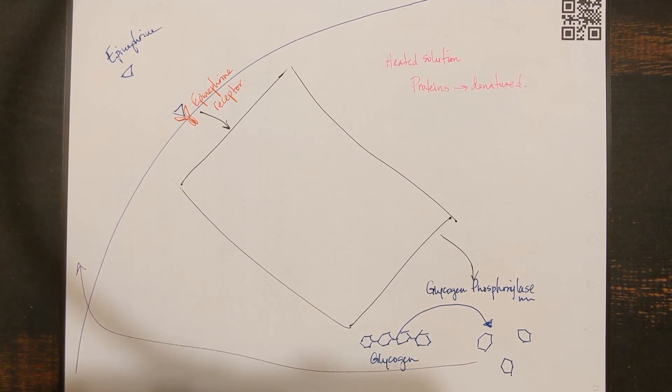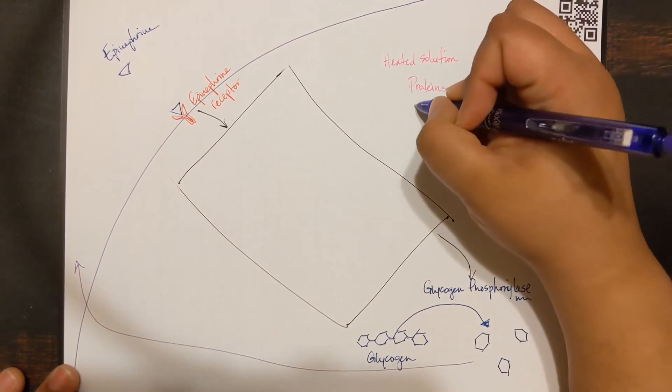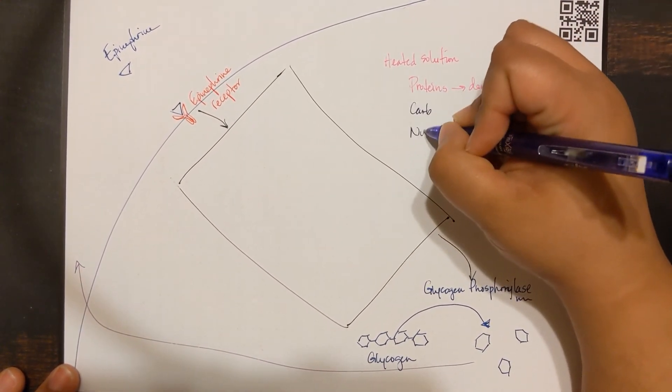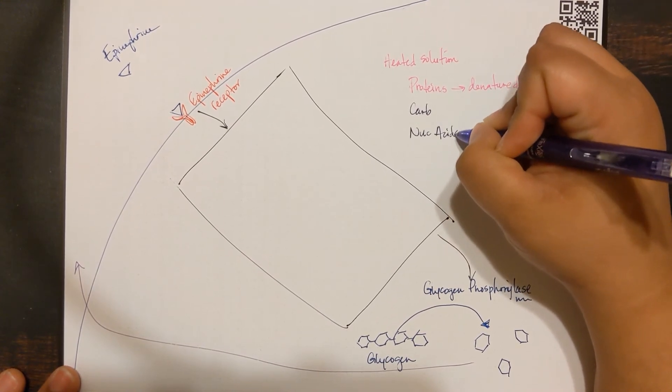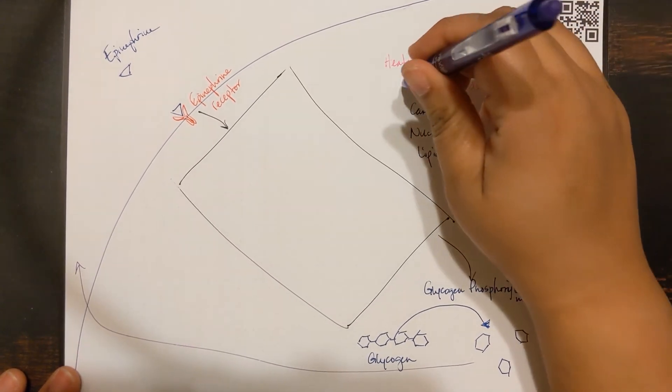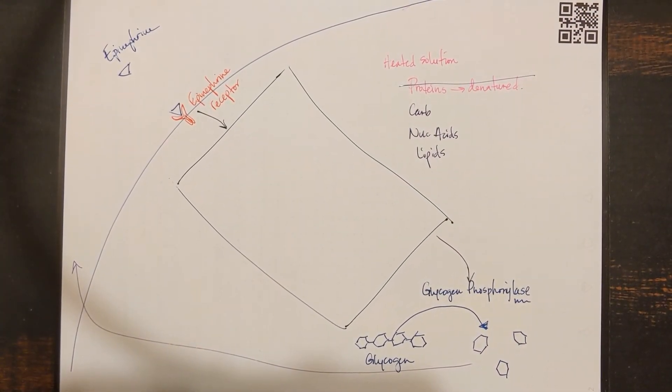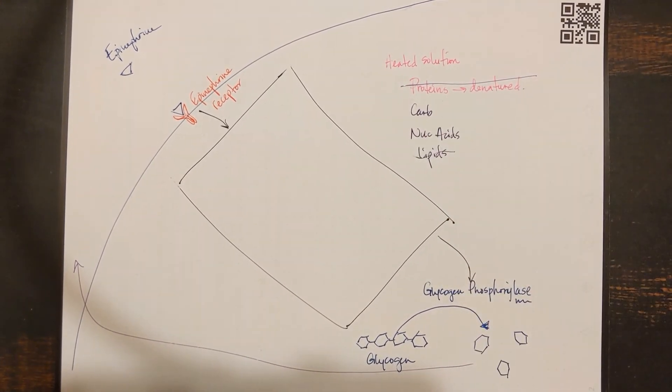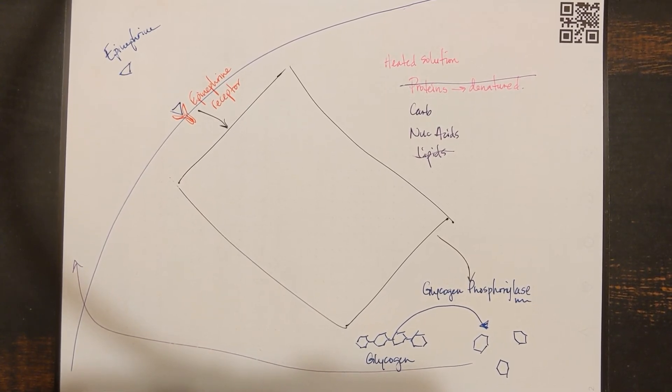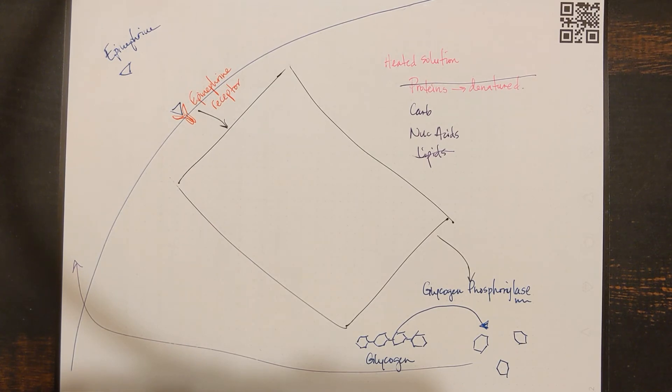If you could do that, and then add epinephrine and still get glucose, then that would show that whatever this mystery substance is in the cytoplasm was not a protein. Turns out that it worked. Heating this cytoplasm fraction did not destroy its ability to activate glycogen phosphorylase. It's not proteins, because proteins would have been denatured. Not likely to be lipids, because lipids would not be able to travel well on the inside of a cell. Ultimately, after a lot of work, 20 years worth of experiments, they narrowed it down to this molecule called cyclic AMP.